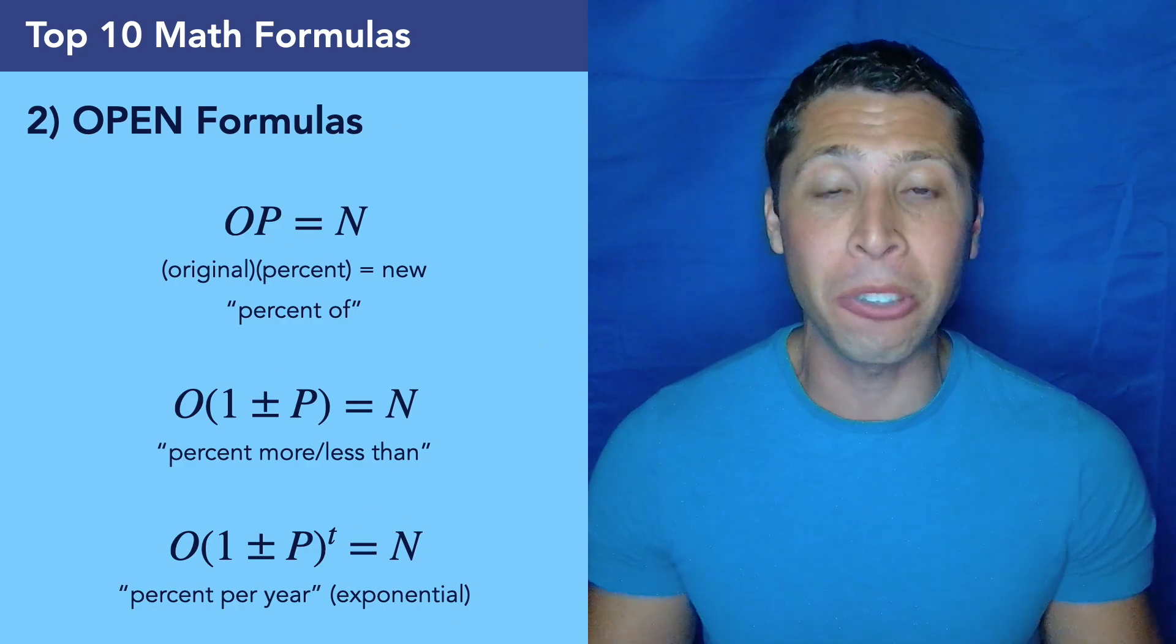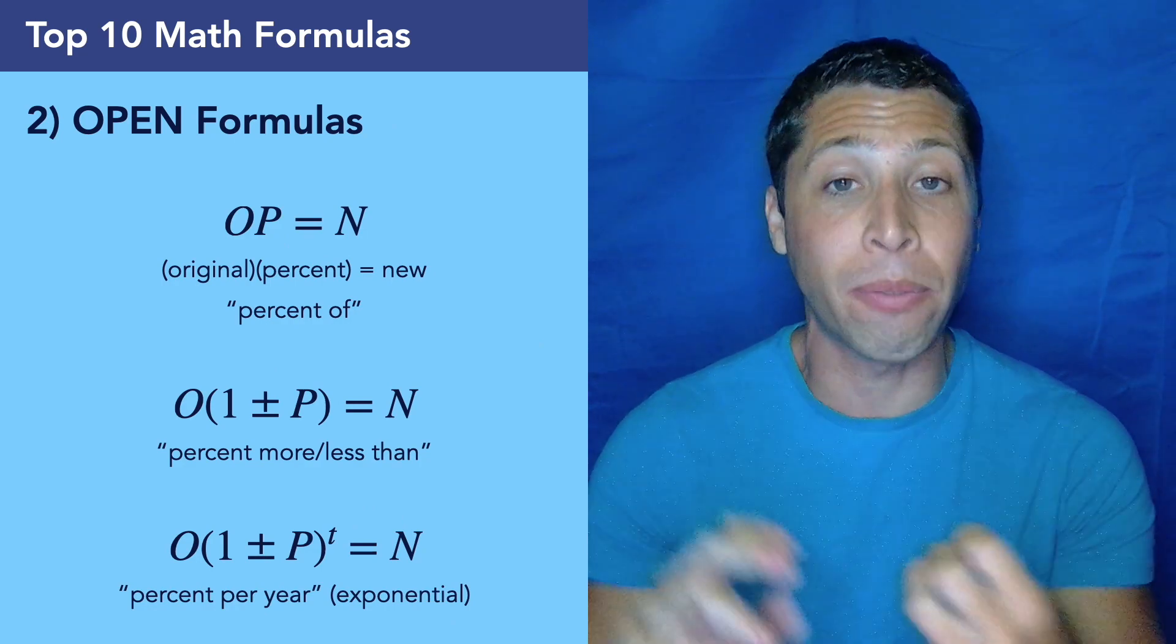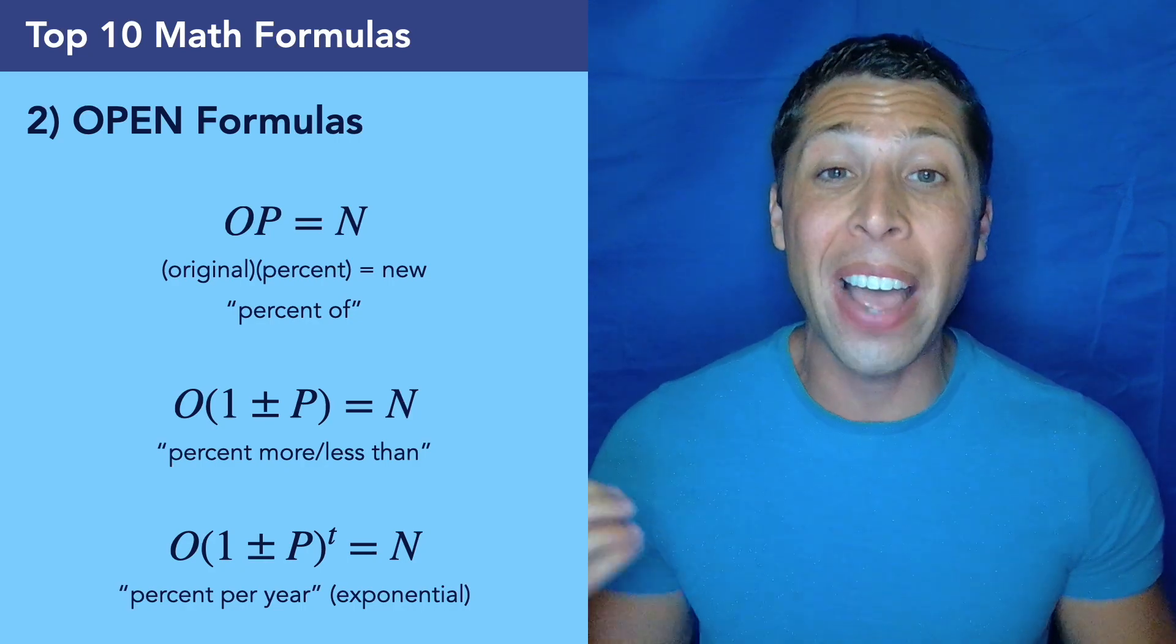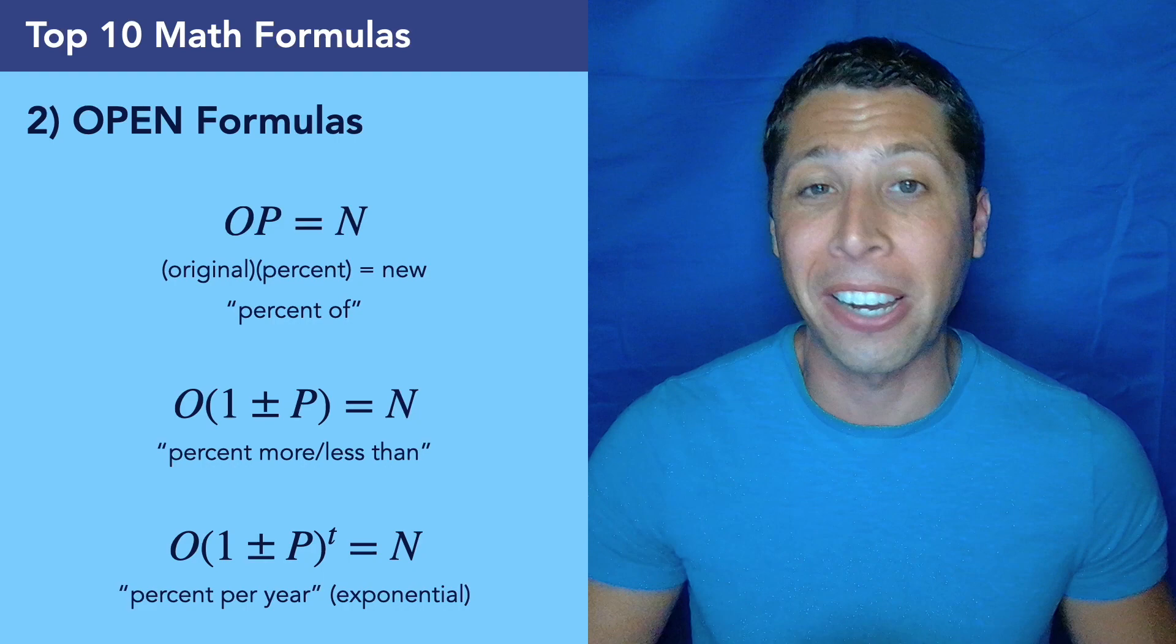And then number 2 is three formulas in one, we've got the open formula we use for percentages, so we've got regular old percentages at the top, then in the middle there we've got percent change, and at the bottom we have exponential equations which are also about percentages, so you have to memorize all three.